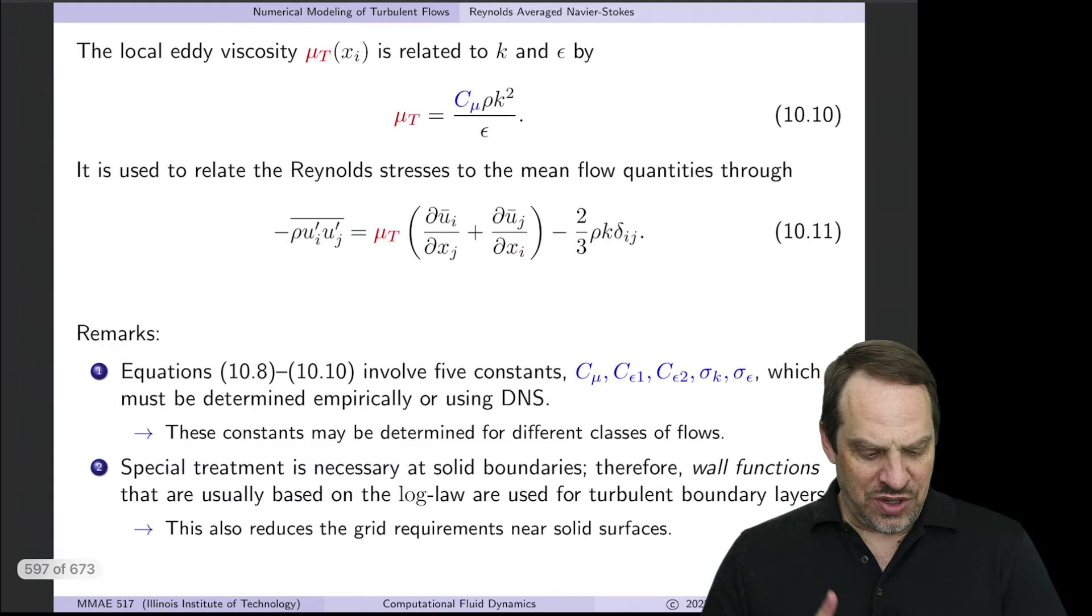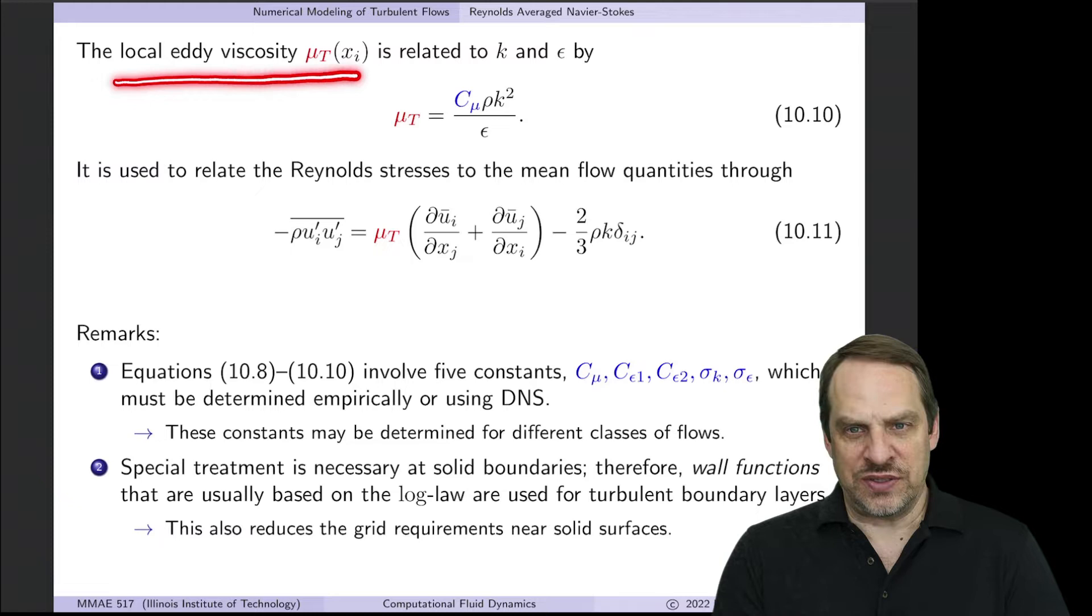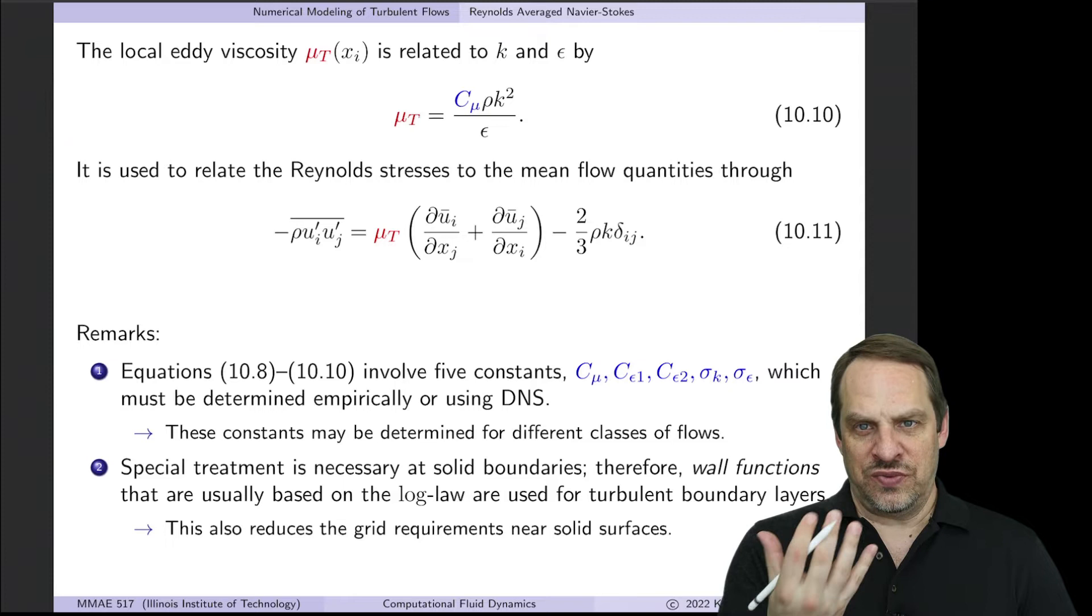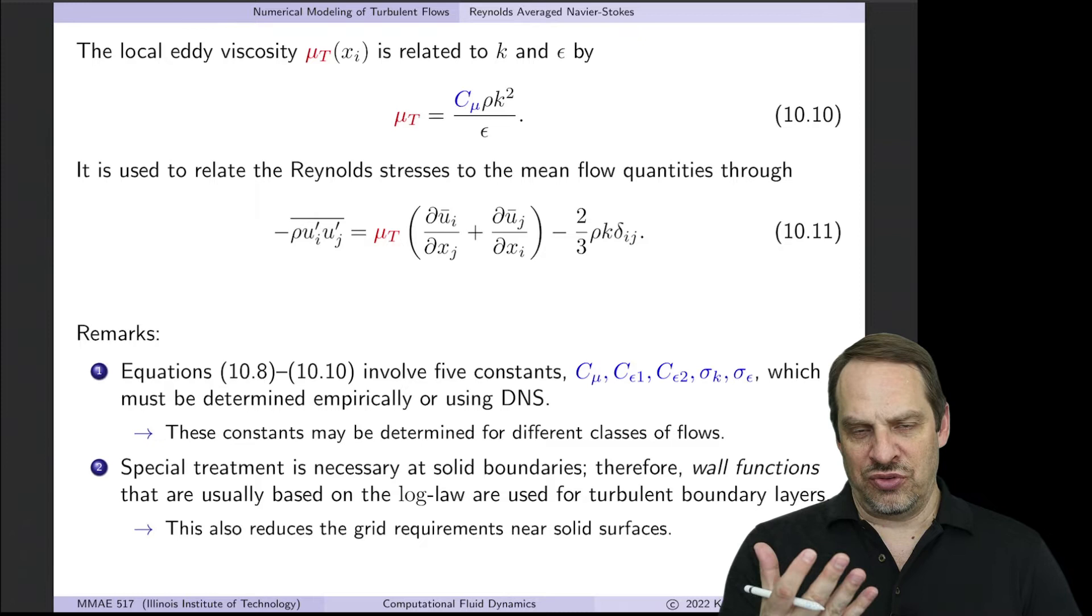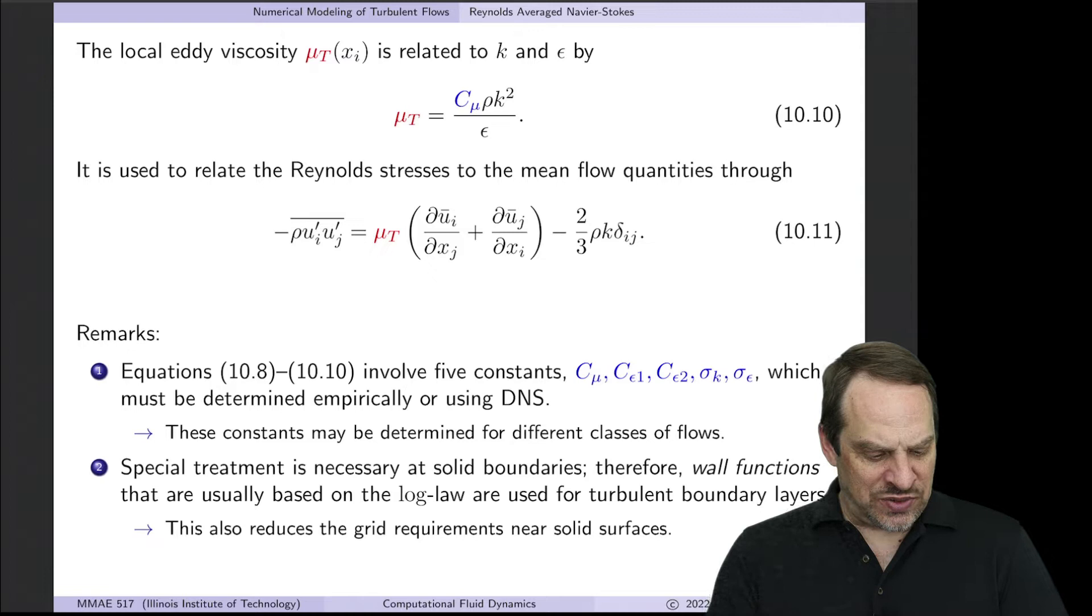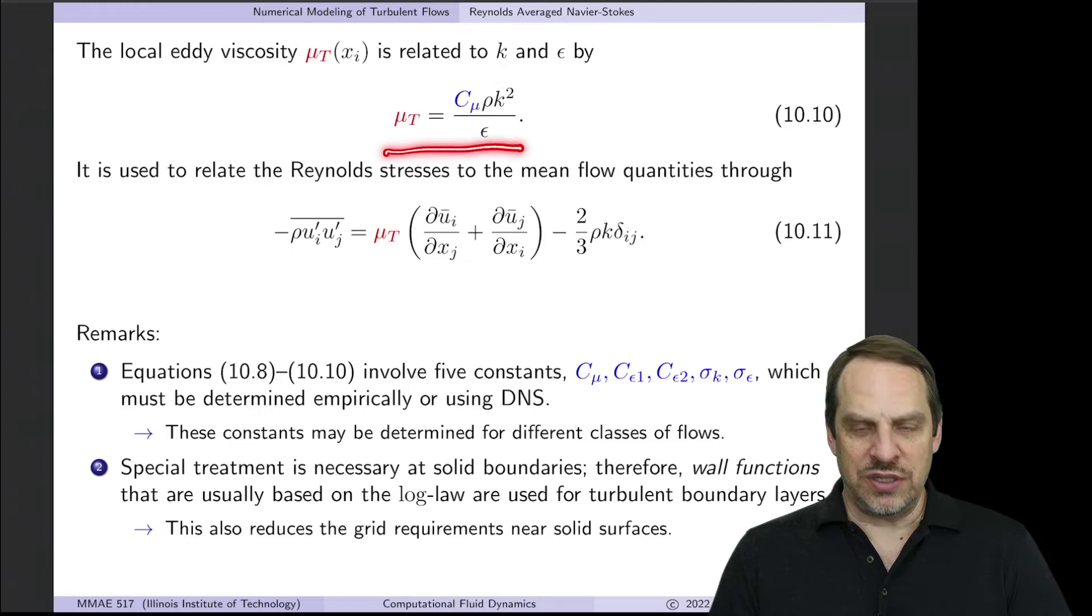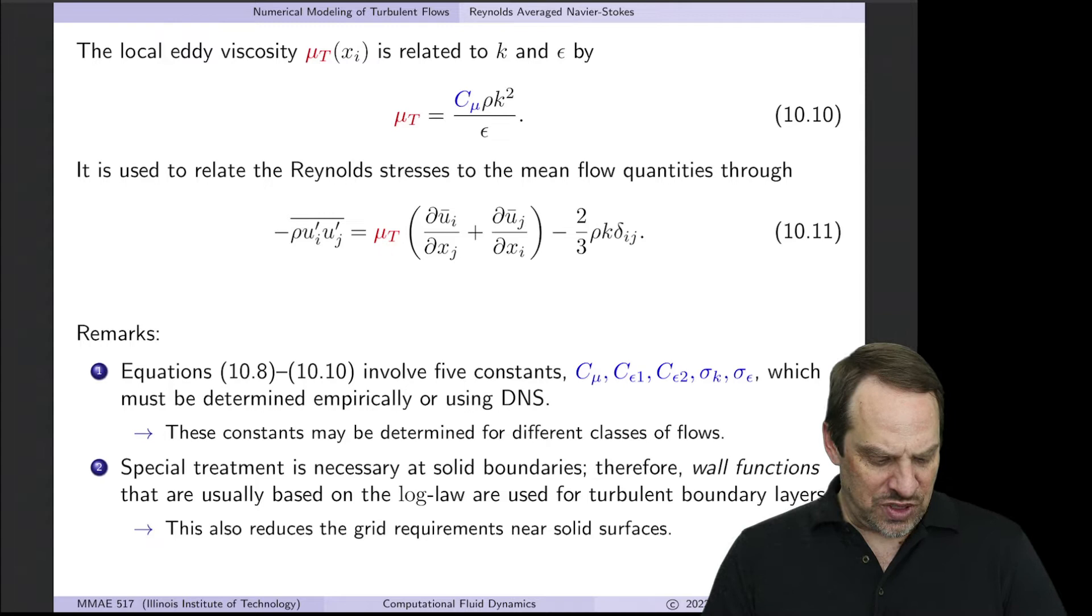Let me define mu sub t. This is the local eddy viscosity. We had something very similar in LES. The fluid itself has a viscosity, a property of the fluid. Effectively, when you have small-scale turbulence, that changes the viscosity, typically increases the apparent or effective viscosity. That's being accounted for by this local eddy viscosity, and that relates k and epsilon. You see the c-mu constant here.